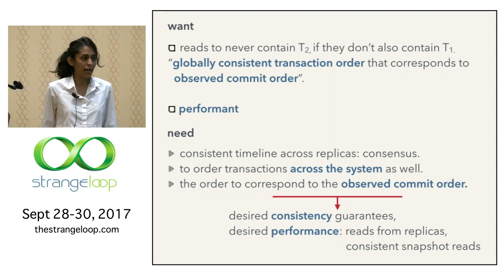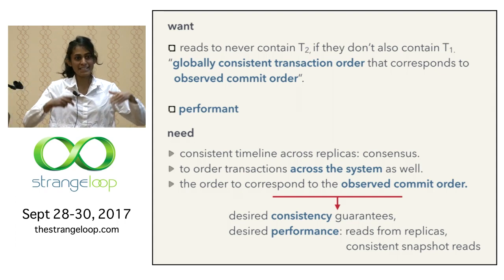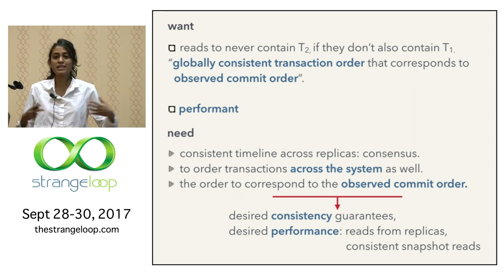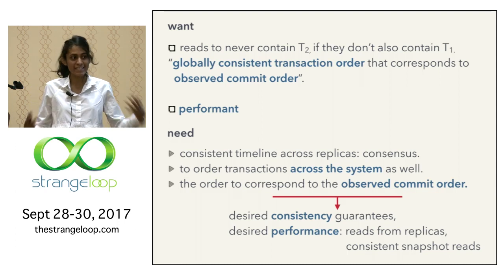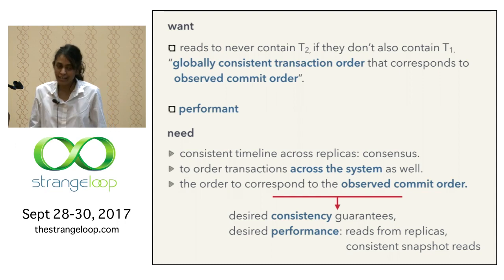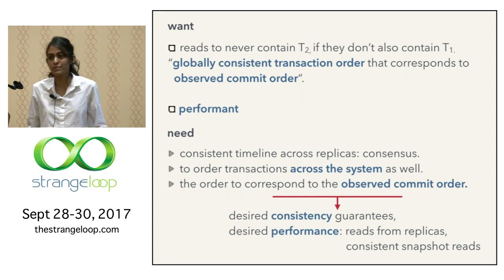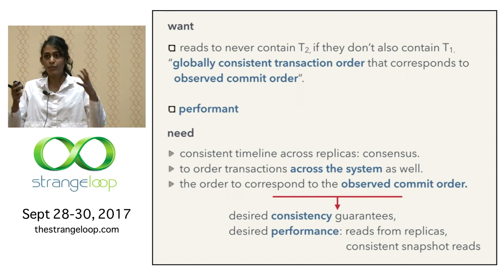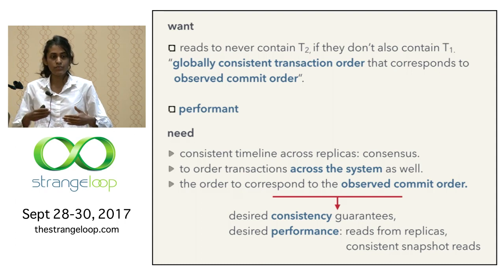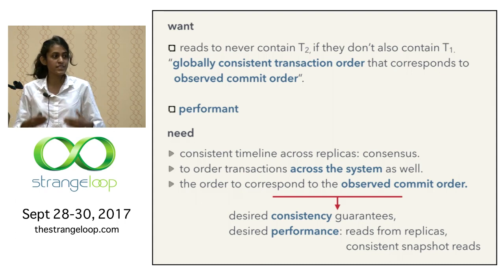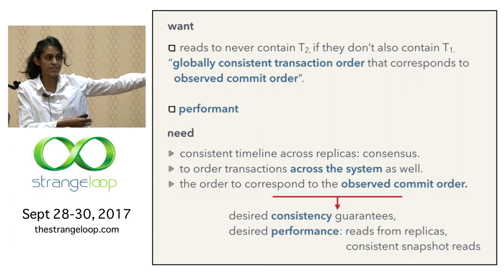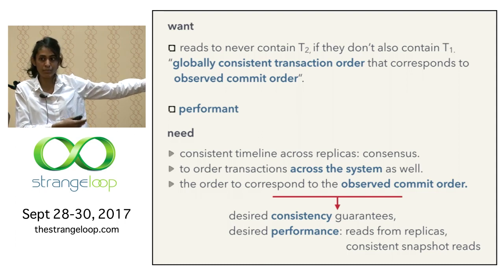For the first requirement — consistent timeline across replicas — we can use consensus protocols like Paxos, Raft, two-phase commit, or three-phase commit to synchronously replicate, and that gives us a consistent timeline across replicas.